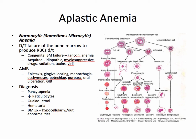Because this is a bone marrow problem, you will notice a decrease in all blood cells as well as platelets, resulting in pancytopenia. You'll also find a decreased reticulocyte count, GUIAC positive stools, and hematuria. The diagnosis is confirmed by a biopsy that shows hypocellular bone marrow without abnormalities such as dysplasia, blasts, fibrosis, or other abnormal infiltrates.